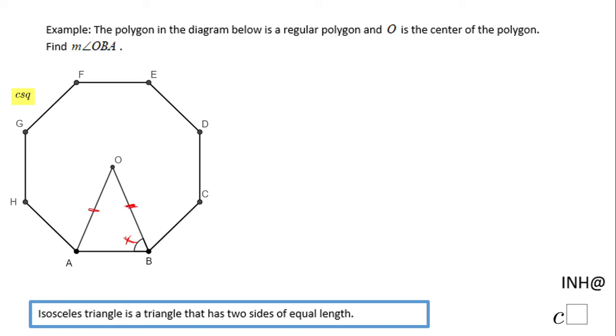are going to be congruent, so triangle OAB is an isosceles triangle. This angle also will be congruent to the angle we need to find out, so I'm gonna call them both X.